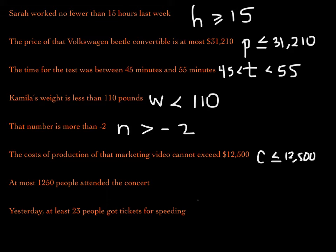At most 1,250 people attended the concert. So the maximum number of people there were 1,250, but maybe something less than that — nothing more than 1,250. So if we use P for people, the number of people is less than or equal to 1,250.